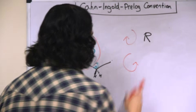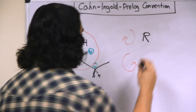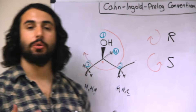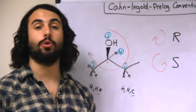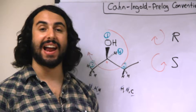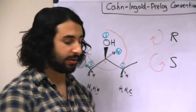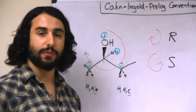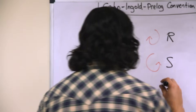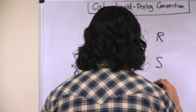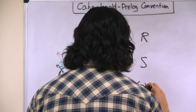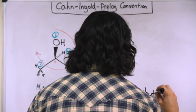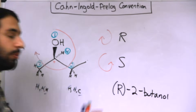If the circle went counterclockwise, that would be an S stereocenter. These are the two absolute configurations for any chiral center. Because we have determined that this is clockwise and therefore R, that means this is R-2-butanol.